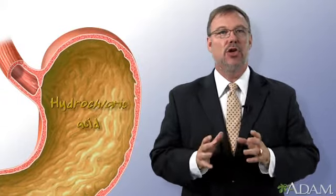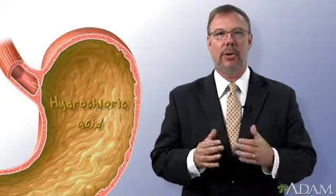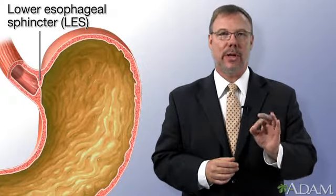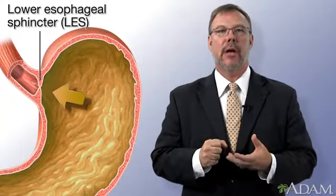This acid is so powerful it could eat the paint right off your car. Fortunately, there's a band of muscle between the stomach and the esophagus called the lower esophageal sphincter or LES that clamps down to prevent the stomach contents from moving or refluxing upward and burning the lining of the esophagus.